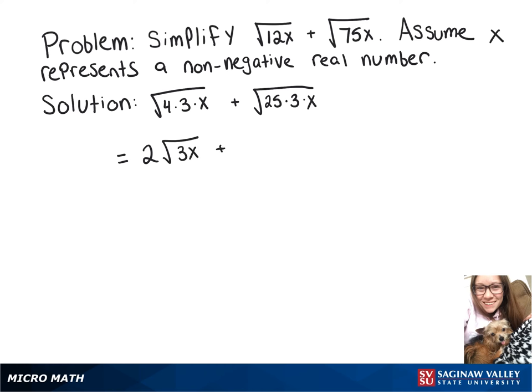And then on our other one, the square root of 25 is 5, so we can take that out from underneath the radical, and then we're left with the square root of 3x inside the radical.